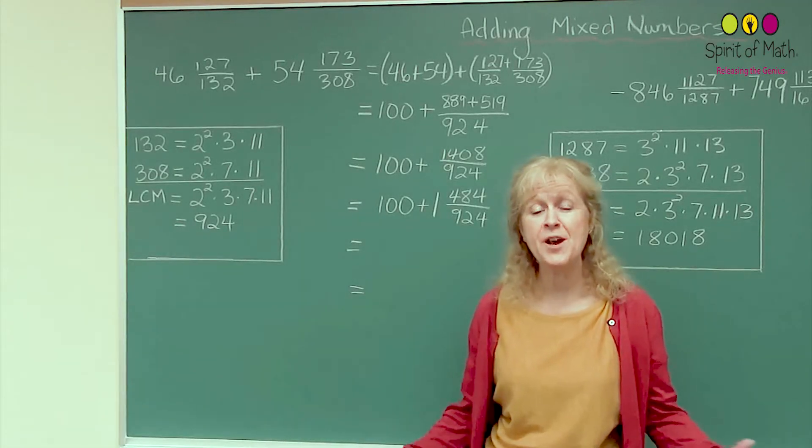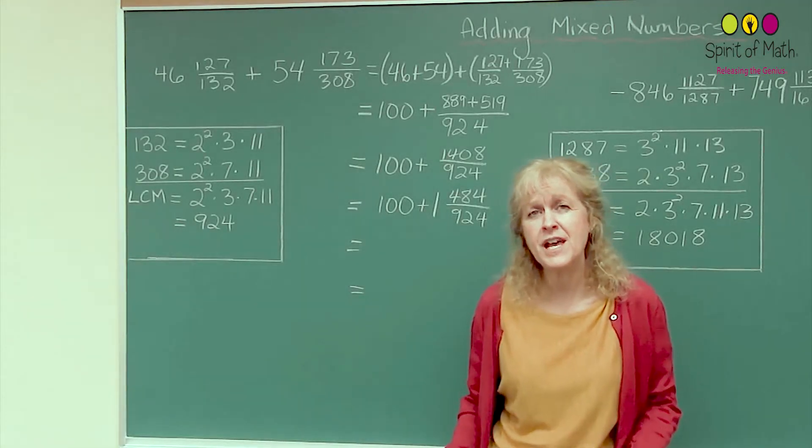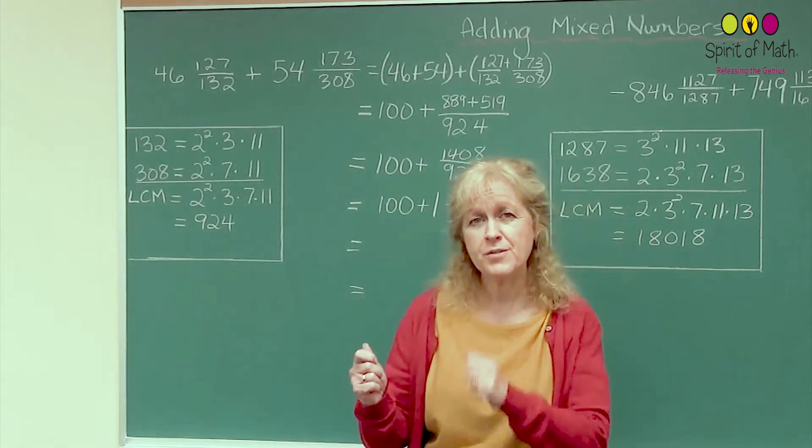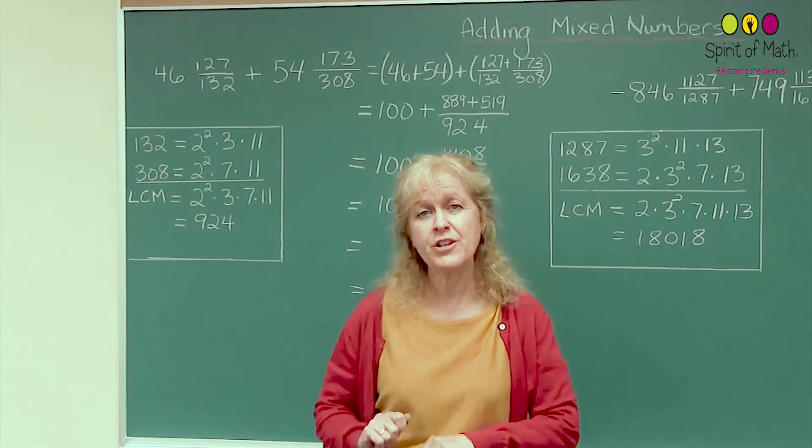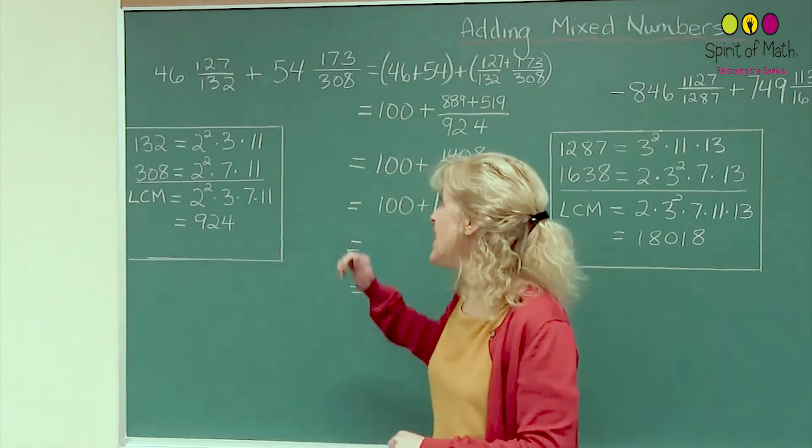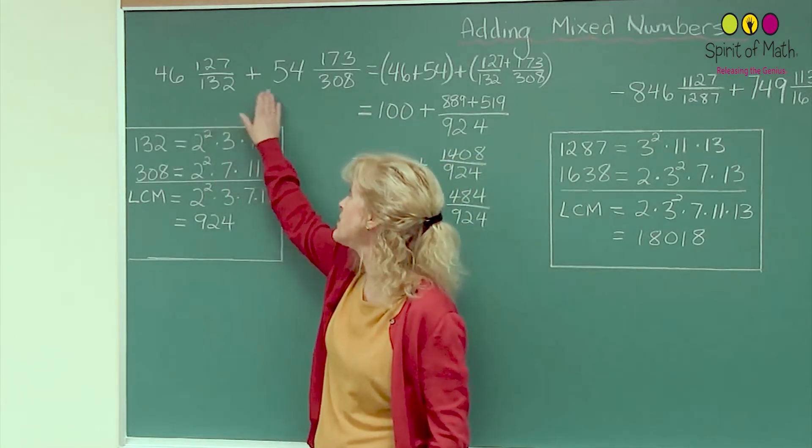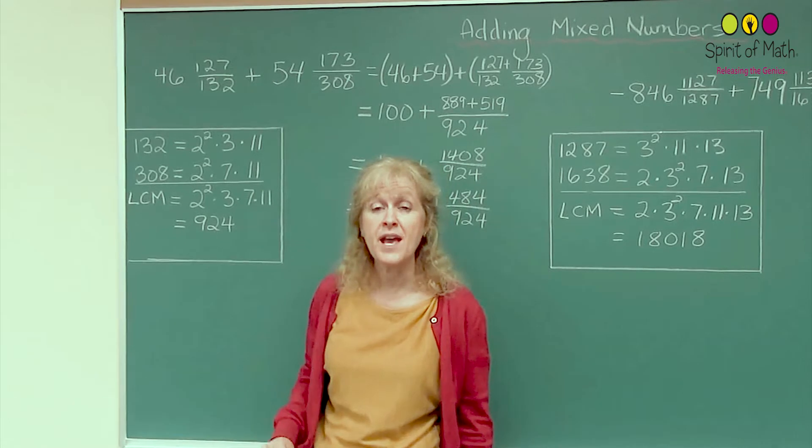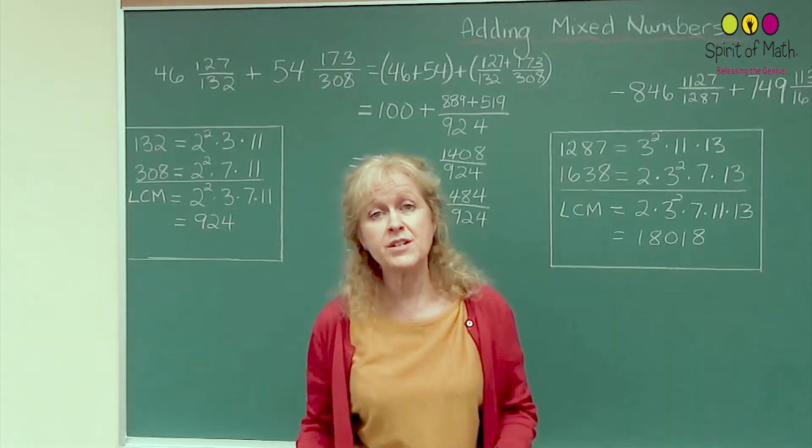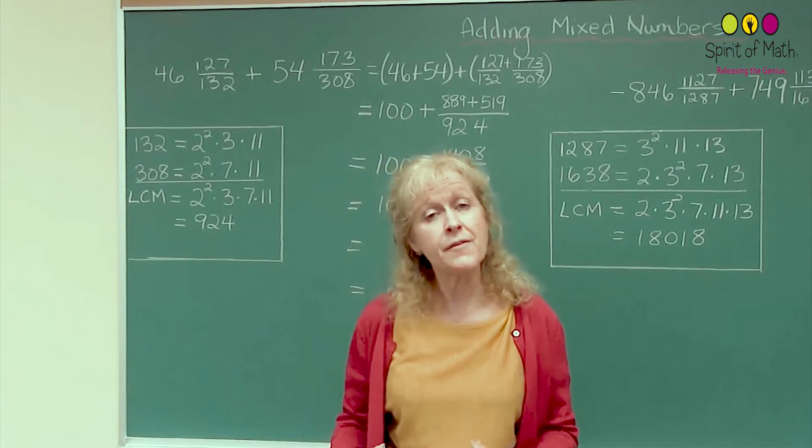Up to this point you have added mixed rationals by just adding an integer part with a fraction part. Now what we're going to do is add fractions that look like this where you have an integer part and a fraction part in each of them. And there are certain steps that I'm going to go through that make this very easy.